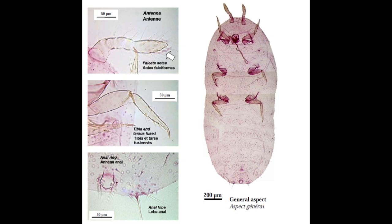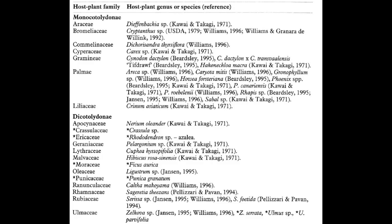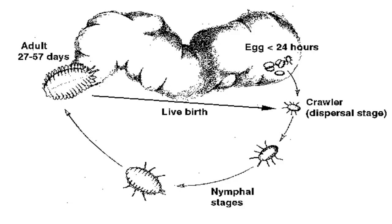Rhizoecus hibisci is one of several root mealybugs with a similar likeness to Rhizoecus americanus, Rhizoecus catechins, Rhizoecus dianthi, and Rhizoecus falsifer. They are documented on 26 genera in 20 plant families, mostly associated with ornamentals and foliage plants, and was first described on the tea plant, Camellia sinensis.